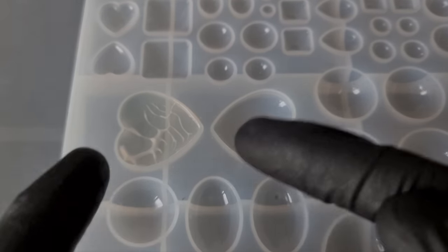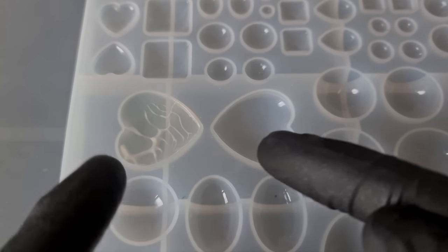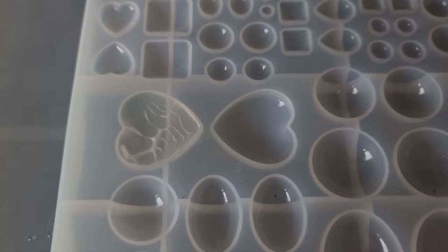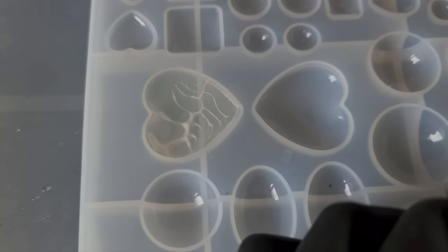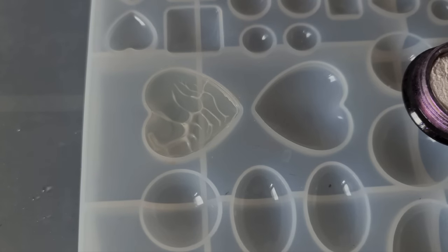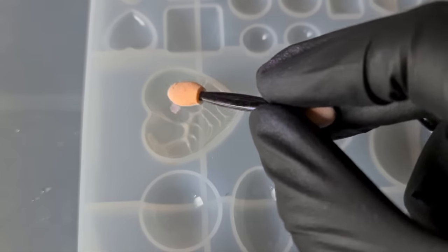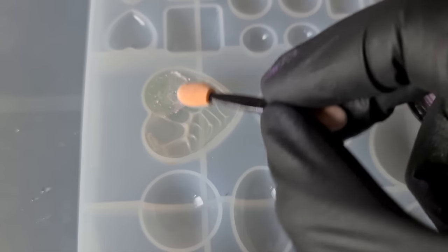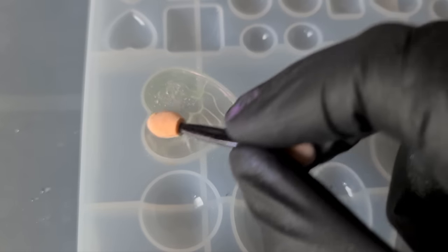You want to cure it for a good two minutes just to make sure there's no kind of cure inhibition, two minutes on both sides. Again, you can do this any way you like, I'm just showing you the technique. So I'm just going to dust the back of that with one of my nail powders. I absolutely love these, we have discovered interference powders work just as well. Just cover the whole back.